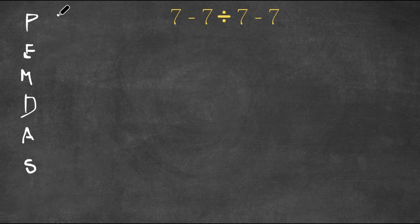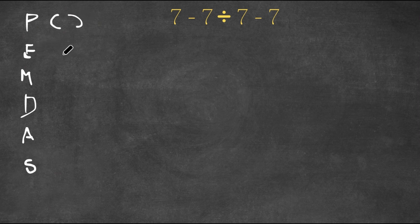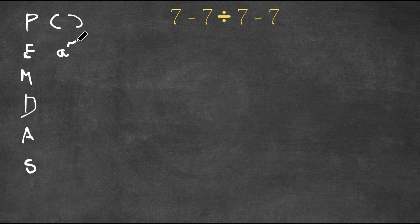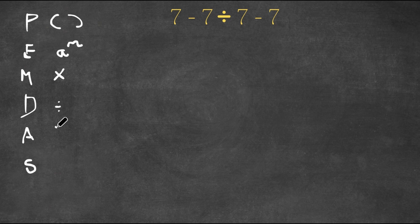Now the P stands for parentheses, the E stands for exponents, the M stands for multiplication, D stands for division, A stands for addition, and S stands for subtraction. This is the order in which you want to solve a mathematical problem. You first start with whatever is in the parentheses, then you go to exponents, then multiplication, then division, then addition, then subtraction.